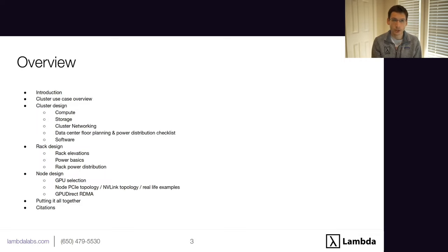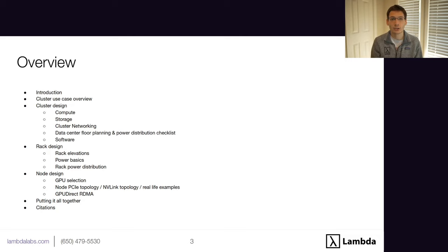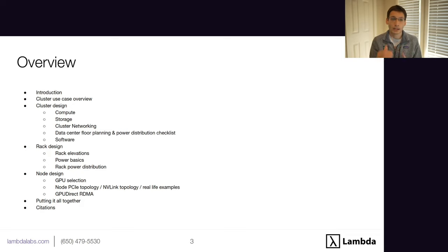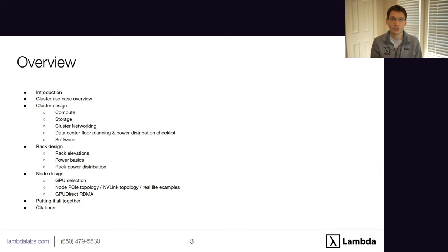I'm also the lead architect of the Lambda Echelon, which is our turnkey GPU cluster product. This talk is largely based on the Lambda Echelon reference design white paper and the experience we've gained deploying these large clusters for customers. I'll start with use cases that drive cluster design, then walk through three levels of abstraction: cluster design, rack level design, and node design, and how they interact with each other.